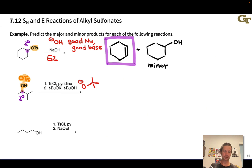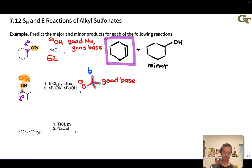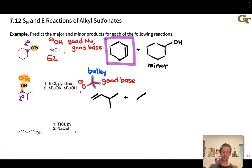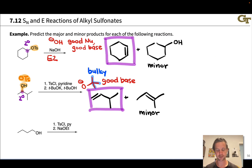Tert-butoxide is a bulky base — good base, but quite bulky, which tends to discourage SN2 substitution. So the major product here is going to be an E2 elimination product, and because the tert-butyl group is quite bulky, we're going to end up with the Hofmann alkene as the major product — the less substituted alkene derived from deprotonation at the methyl group. The minor product will be derived from Zaitsev elimination, and we may see none of it at all with the very bulky tert-butoxide.